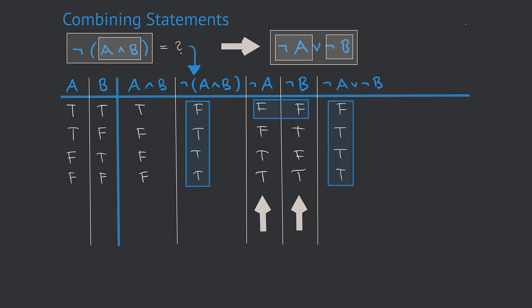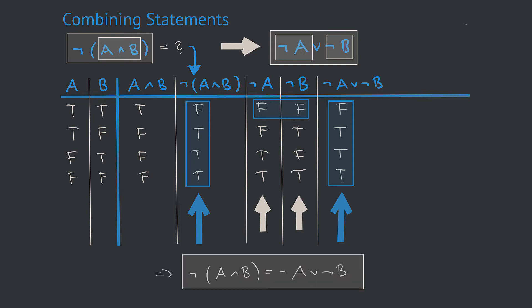If we have a close look at our two results, we find that they are in fact the same. If all values in the truth table of two expressions are the same, then these two expressions may be considered identical. This identity is called De Morgan's Law. As an example: A means 'something is big' and B means 'something is heavy,' so A and B means 'something is big and heavy.' Not A and B means 'something is not big and heavy,' and something not being big and heavy is equivalent to it not being big, or not heavy, or both.